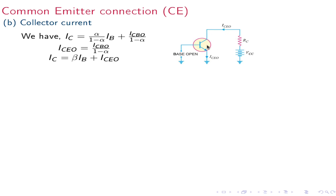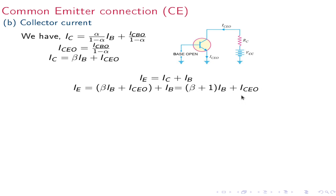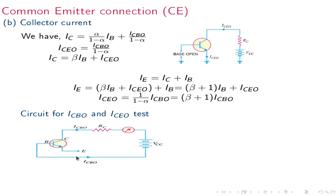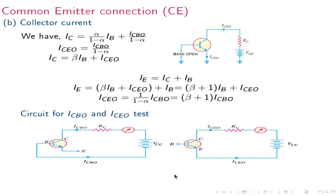With the base open, the emitter current is Iceo (collector-emitter current with base open). Since Ie equals Ic plus Ib, we get Ie equals beta Ib plus Iceo plus Ib, which gives Ie equals (beta + 1)Ib plus Iceo. Also, Iceo equals (1/(1 minus alpha)) times Icbo, where 1/(1 minus alpha) equals beta plus 1, so Iceo equals (beta + 1) times Icbo.